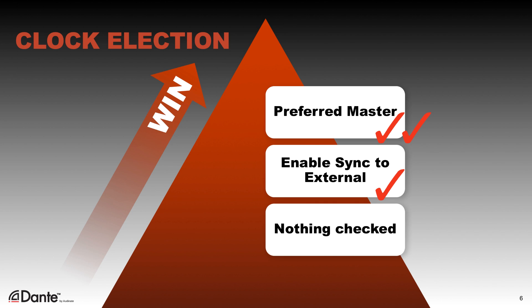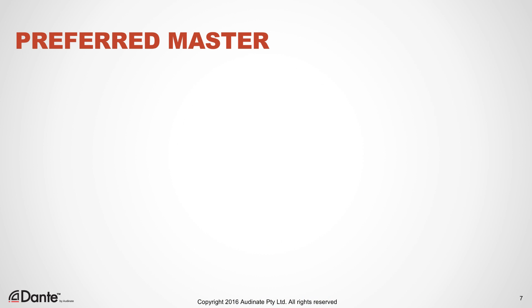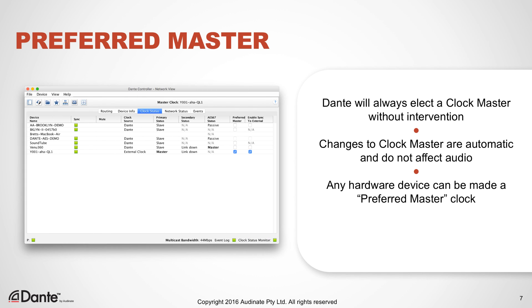In most cases, there is no reason to change the clock election process. Unless you are using external clocks to synchronize non-Dante devices that are part of the system, it is usually best to allow Dante to choose a clock master automatically. Dante's automatic clock election process ensures that clocking will work as designed with no user intervention. Even if an election occurs while audio is flowing, there is no interruption.